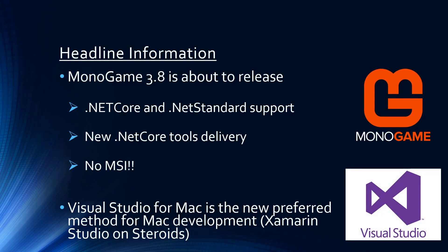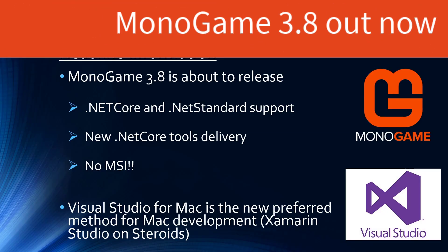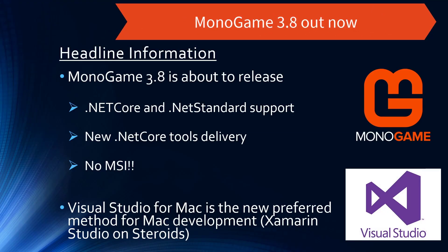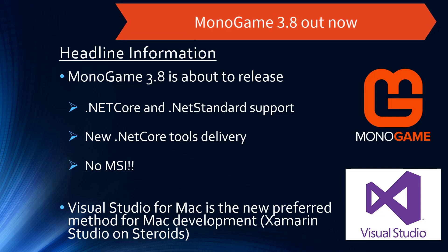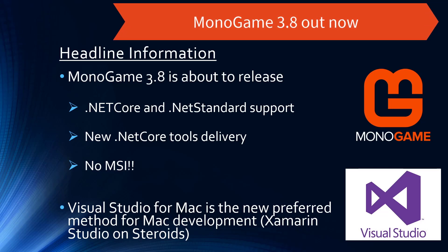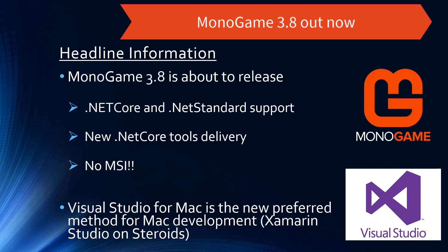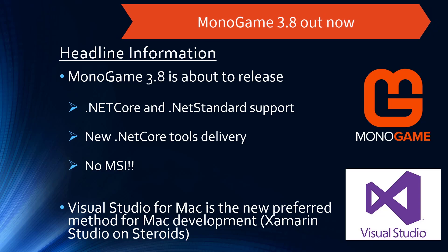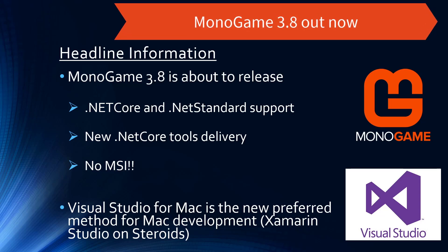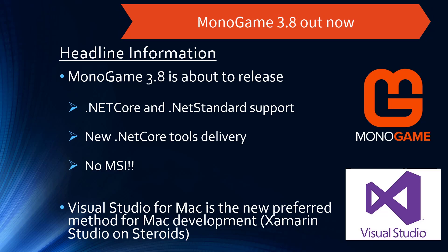As I said in the previous video — but if you're just coming straight here — MonoGame 3.8 is about to release and this is a whole new ball of wax. We're getting new .NET Core and .NET Standard support, a new .NET Core tools delivery, and also there are no installers. Macs didn't really have installers before; we had lots of things you had to point here, there, and there. But now it's a level playing field — the same way you install on Windows is the same way you install on Mac, which is great news.